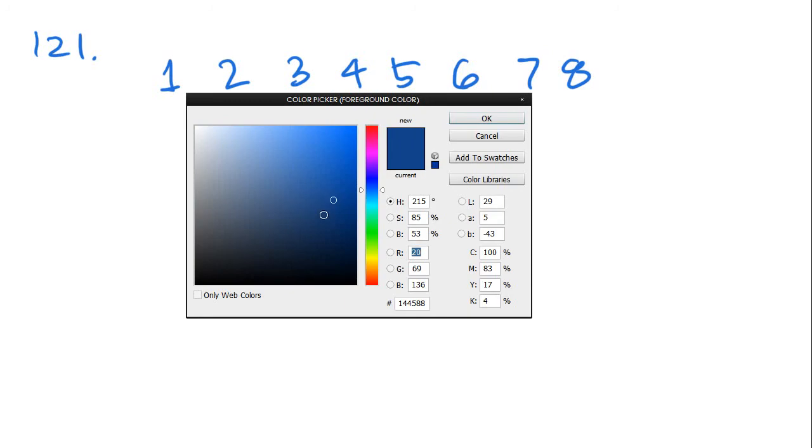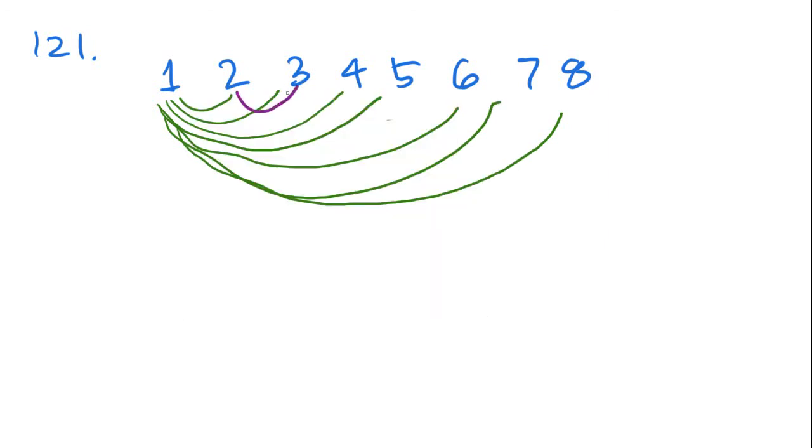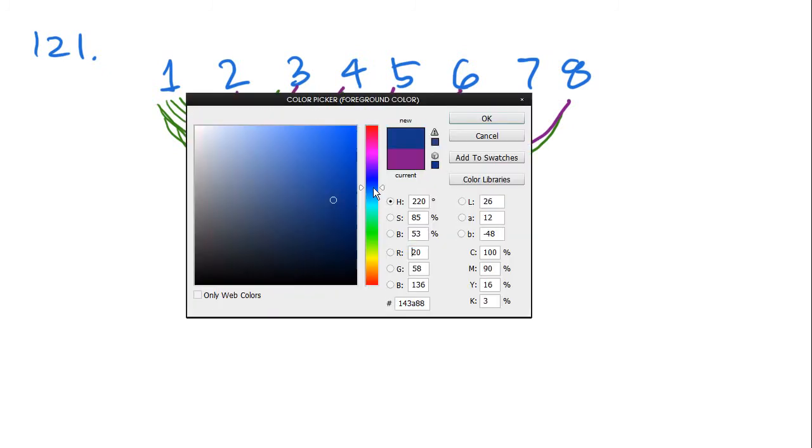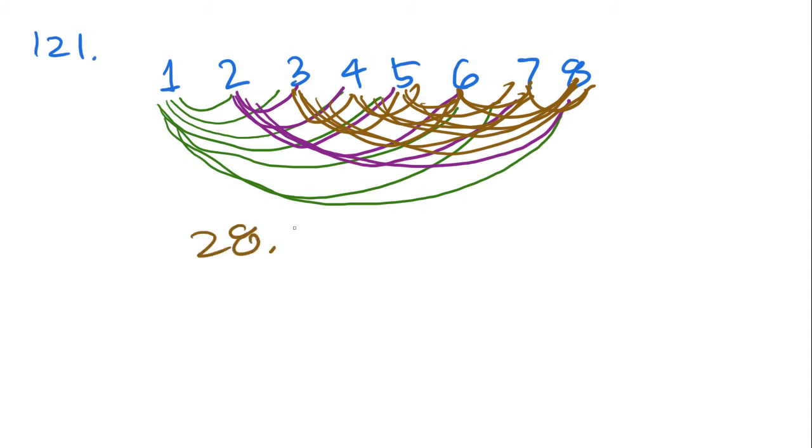So what we're going to do is we need to figure out how many different combinations are possible with eight teams. Well, let's count them. One, two, three, four, five, six, seven. Two and three are together. So that's eight, nine, ten, eleven, twelve, thirteen, three and four, fourteen, fifteen, sixteen, seventeen, eighteen, nineteen, twenty, twenty-one, twenty-two, twenty-three, twenty-four, twenty-five, twenty-six, twenty-seven, and twenty-eight. Twenty-eight is going to be your answer, and that is C.